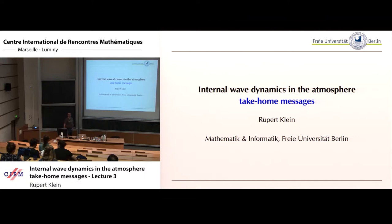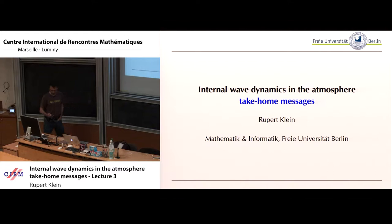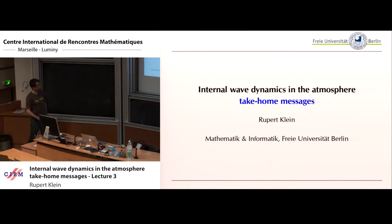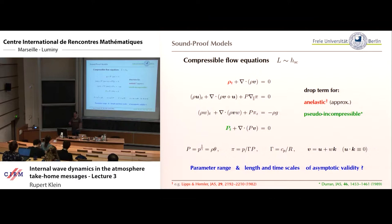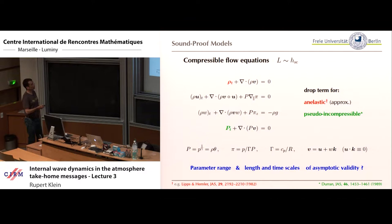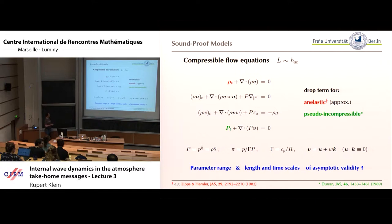I'll wrap up yesterday's lecture briefly and then dive into a new problem setting, showing another type of multi-scale system analyzed by asymptotic methods. The take-home messages from yesterday: we started from the compressible flow equations. Meteorologists want equation sets that don't represent sound waves because they're unimportant and cause problems in numerics. They suggested two reduced models—the anelastic and the pseudo-incompressible model—obtained by dropping either the time derivative of density or the time derivative of pressure from the compressible equation.